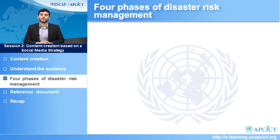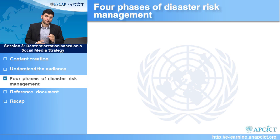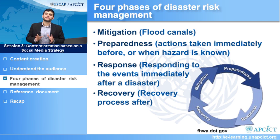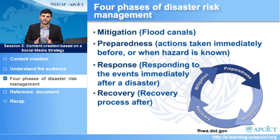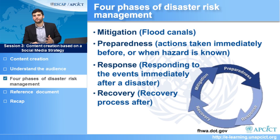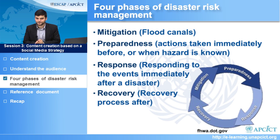Before we get into content creation, let's briefly talk about the four phases of disaster risk management: mitigation, preparedness, response, and recovery. It's a common misconception that these phases happen in order. When a disaster isn't occurring, mitigation operations take place — such as building a flood canal. When a disaster is known to be coming, there's the preparedness phase. Immediately after comes the response phase, and then recovery. However, all of these phases are actually occurring at the same time.